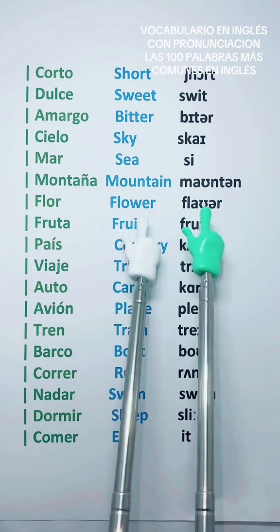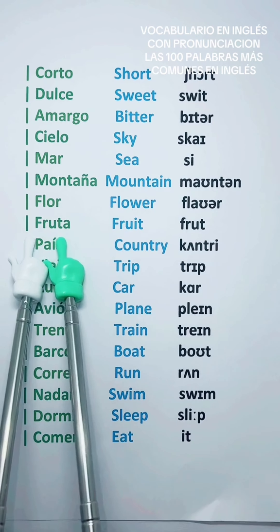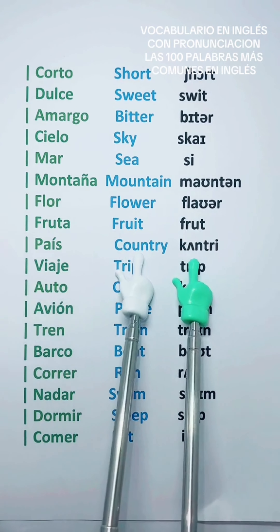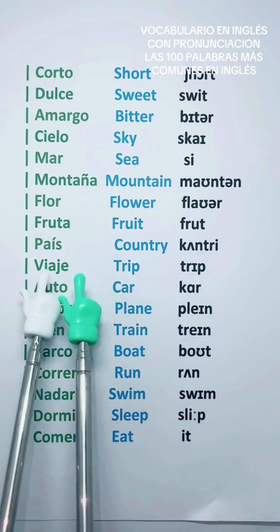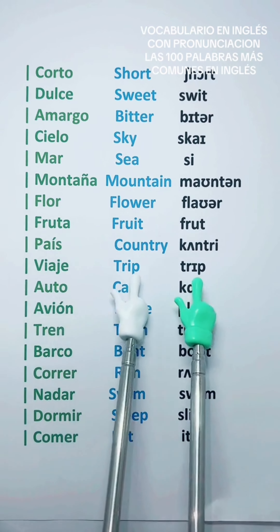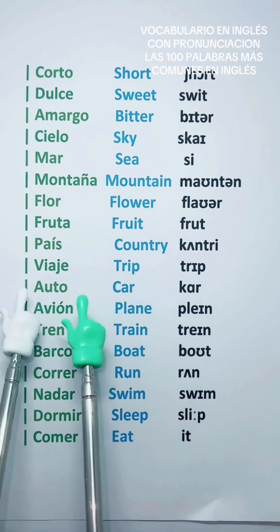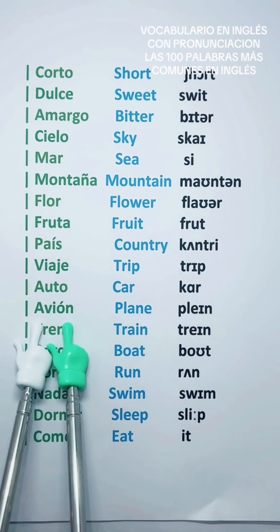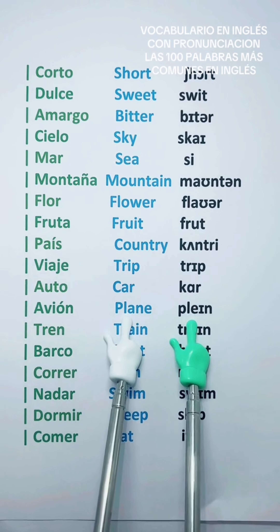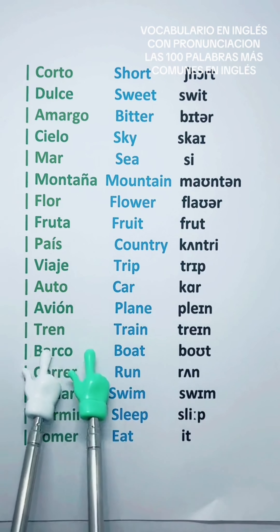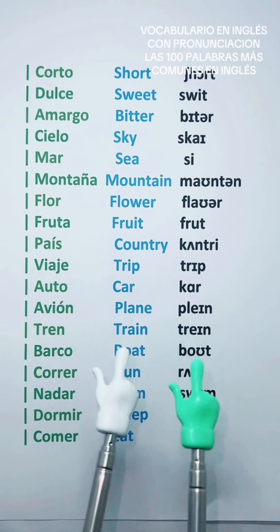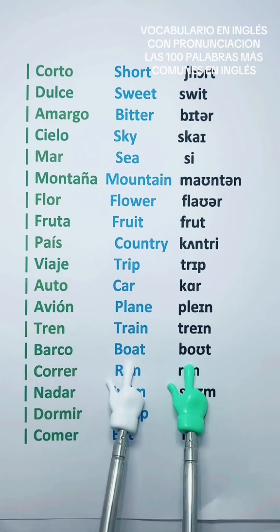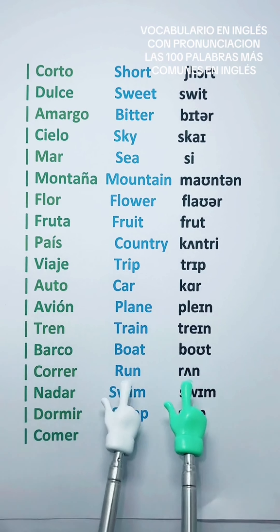Montaña — Mountain. Flor — Flower. Fruta — Fruit. País — Country. Viaje — Trip. Auto — Car. Avión — Plane. Tren — Train. Barco — Boat. Correr — Run. Nadar — Swim.